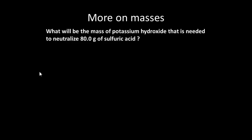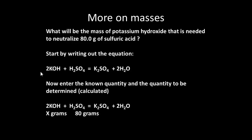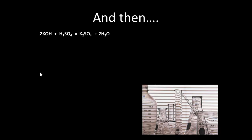What mass of potassium hydroxide is needed to neutralize 80 grams of sulfuric acid? Start by writing the equation: two lots of potassium hydroxide plus sulfuric acid gives potassium sulfate plus two lots of water. Enter the known quantity and the quantity to be determined. The 80 grams of sulfuric acid is the amount we know, and the mass of potassium hydroxide — KOH — is x, the amount we're seeking.